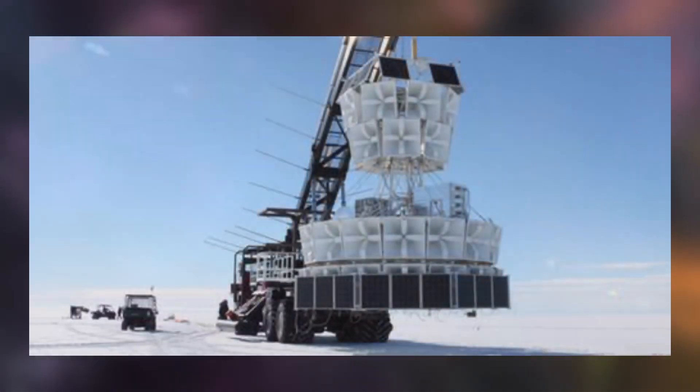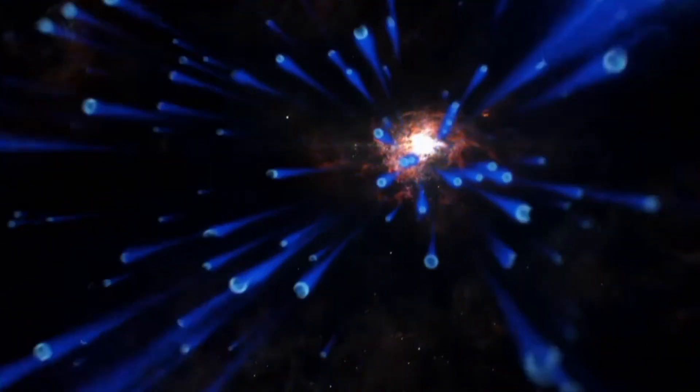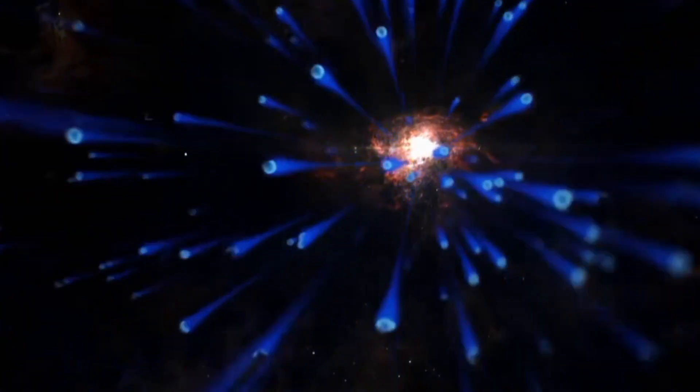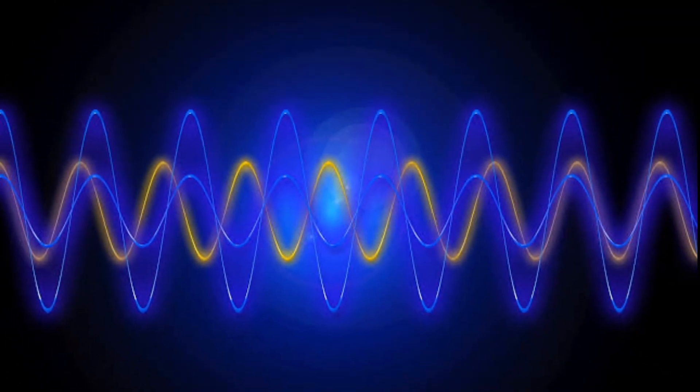ANITA detected evidence of high-energy particles called neutrinos coming up from the Earth's surface. It happened a second time in 2018. There wasn't an explanation for this, so they attributed the anomaly to exotic physics.